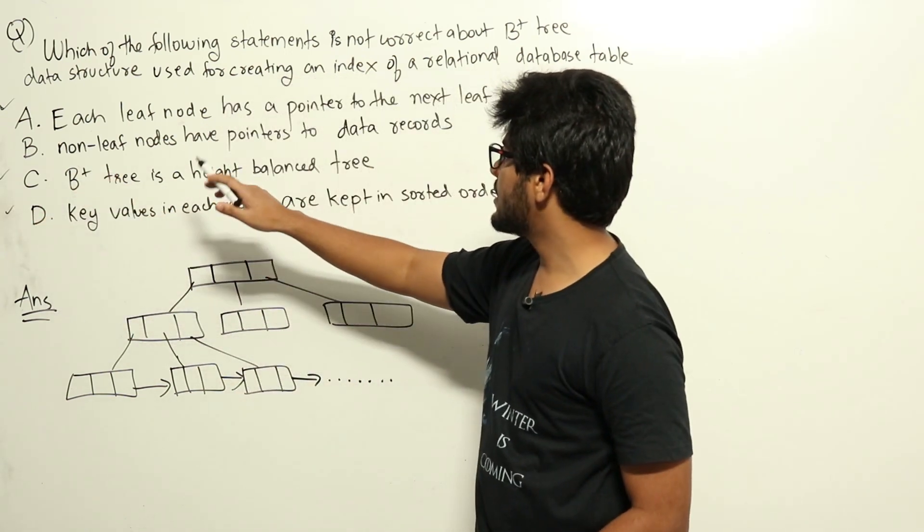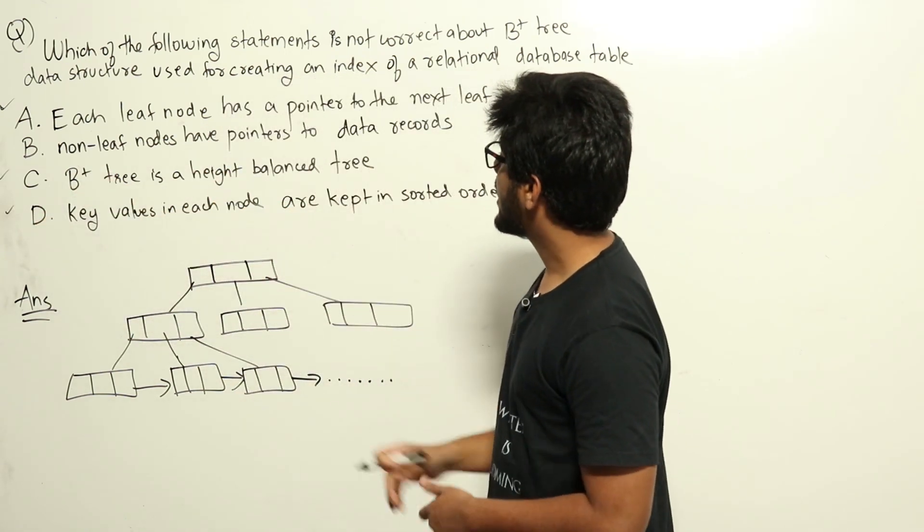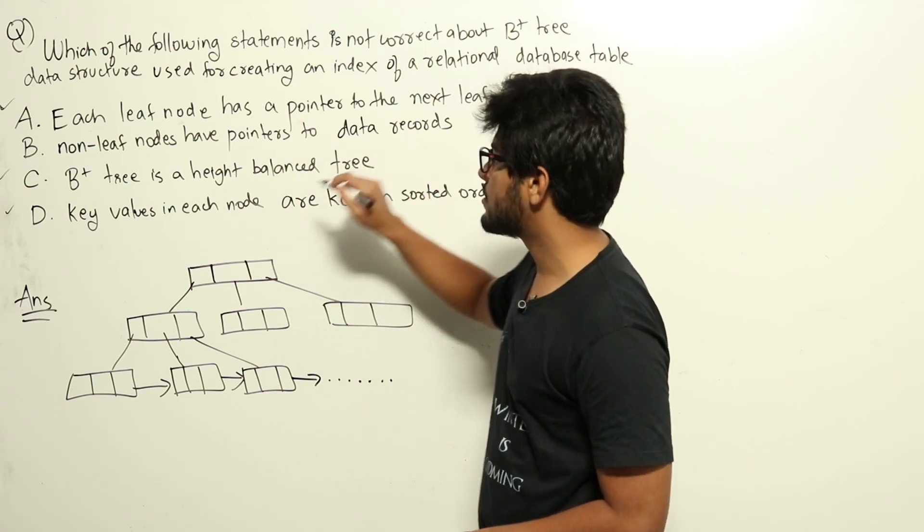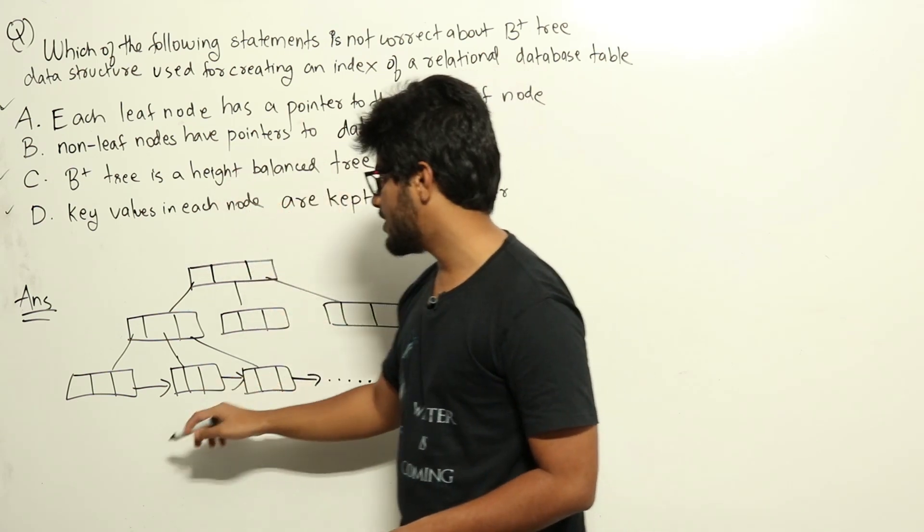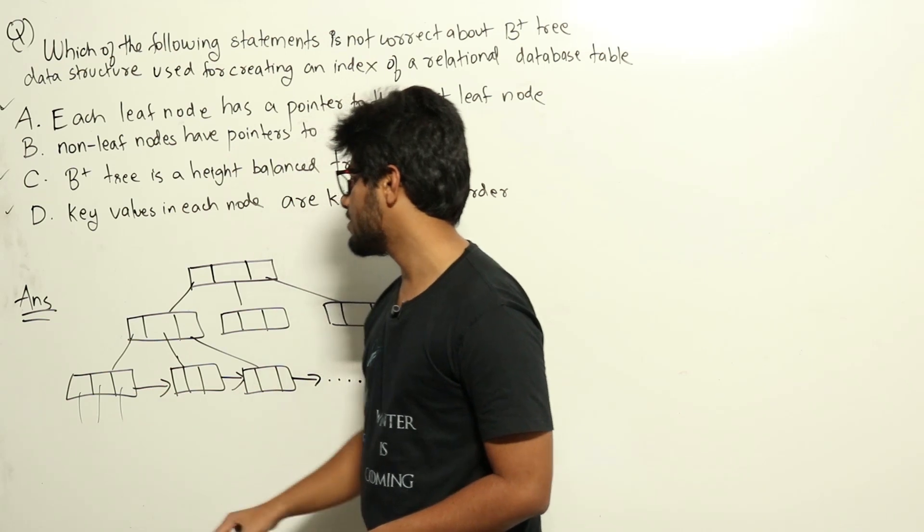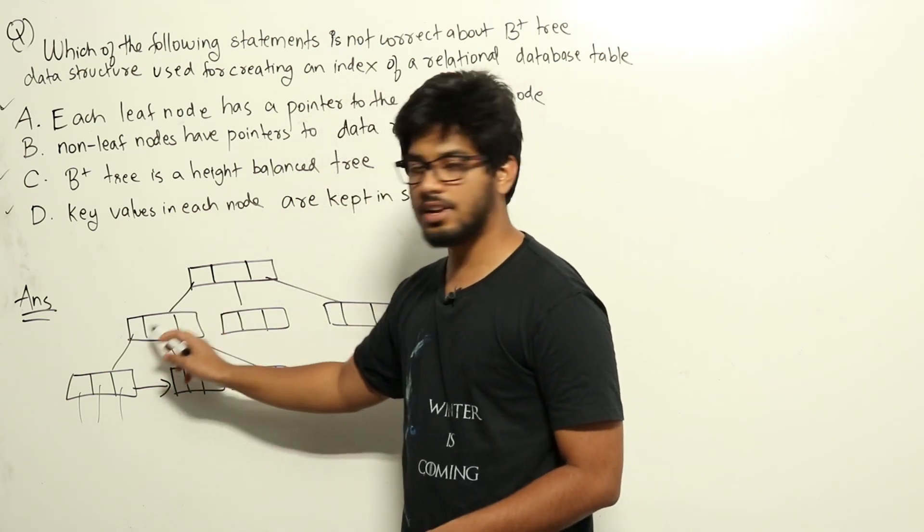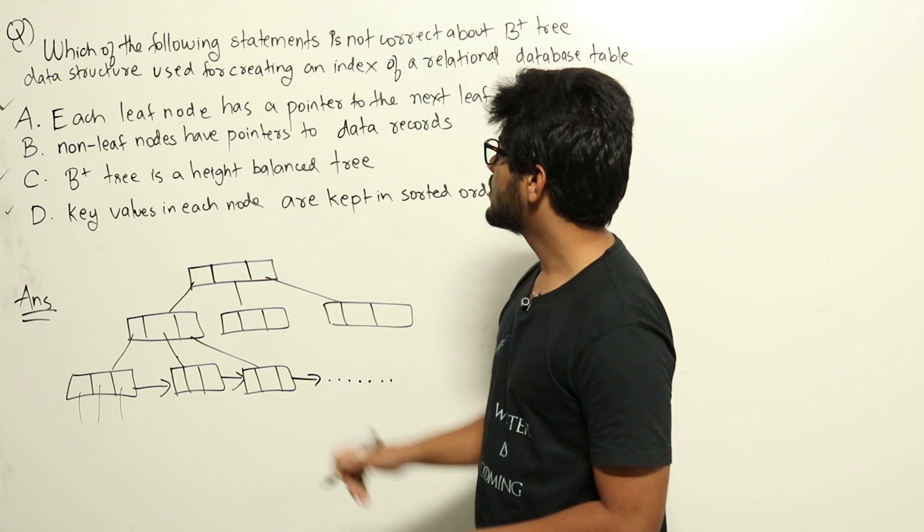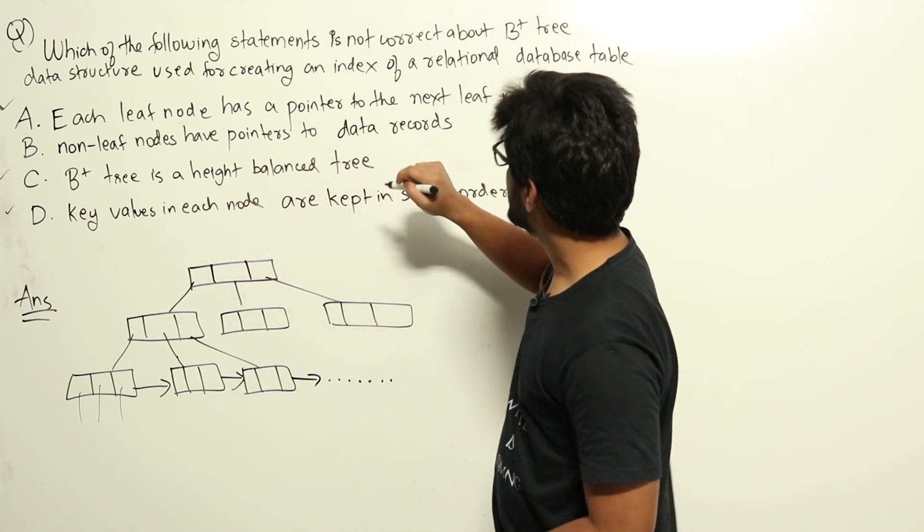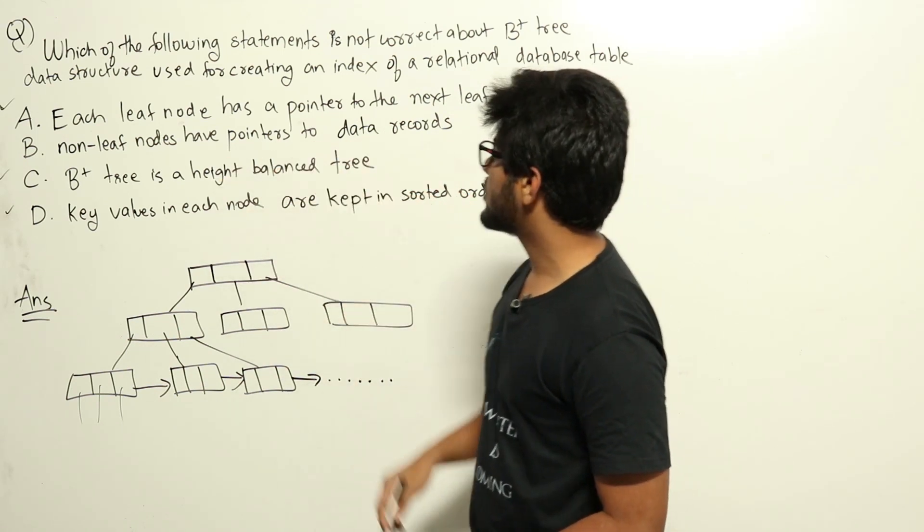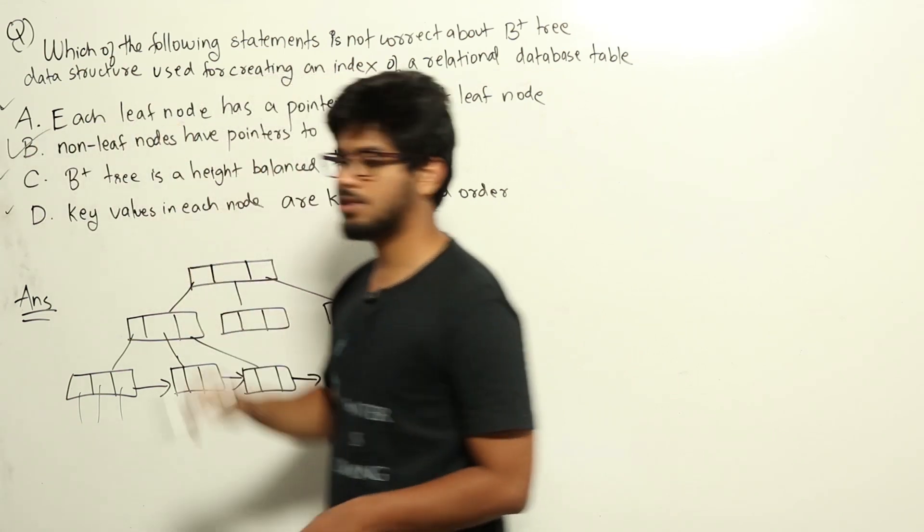So the only wrong one here is option B, non-leaf nodes have pointers to data records. That is false. Only leaf nodes have pointers to data records like this coming from leaf nodes. Non-leaf nodes will have pointers only to additional internal nodes. So option B is the only statement that is not correct. The right answer is option B.